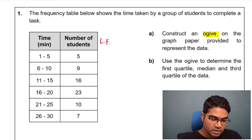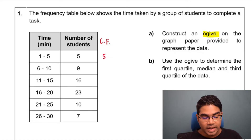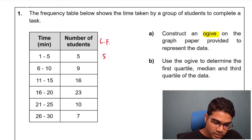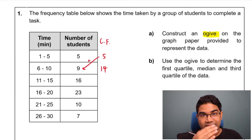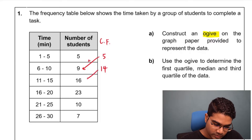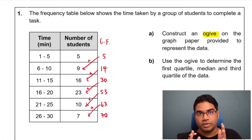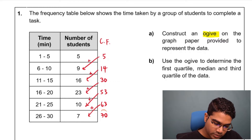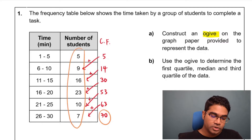How do we do that here? The first class, 1 to 5, cumulative frequency will be 5 because there is no frequency before this. For the next class with frequency 9, we get 5 plus 9 which gives us 14. We repeat the same thing until the final class: 14 plus 16 makes 30, plus 23 gives 53, plus 10 gives 63, and finally plus 7 makes 70. We have all our values of cumulative frequency. You can check that the final cumulative frequency value equals the total frequency — so we have a total of 70 students.